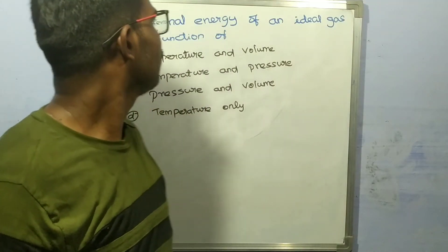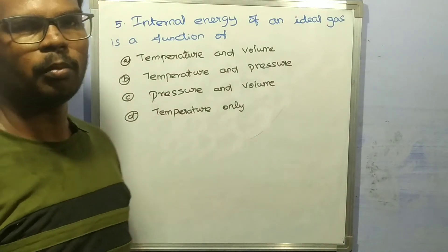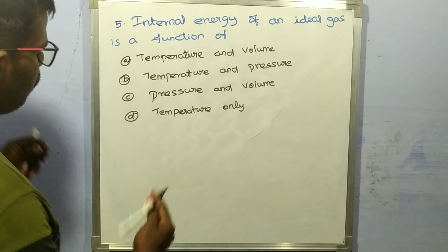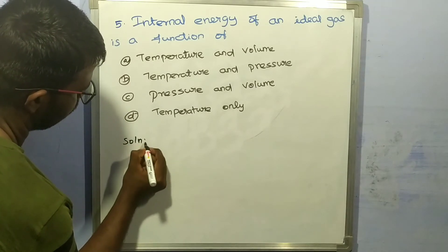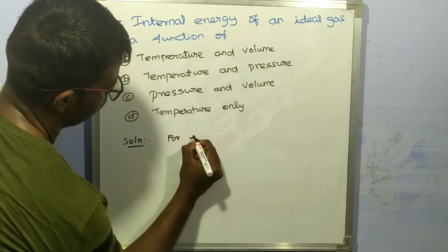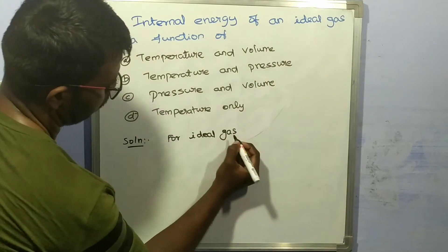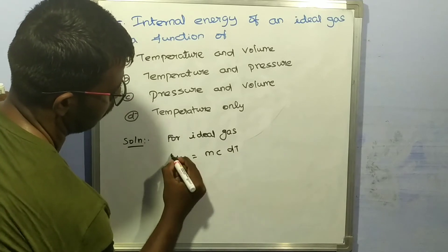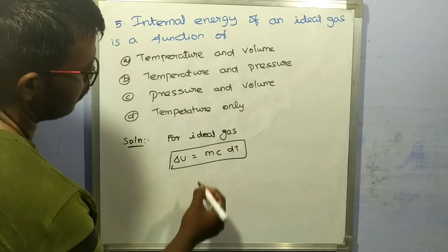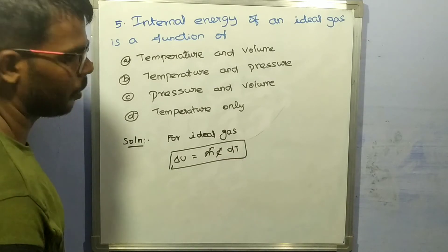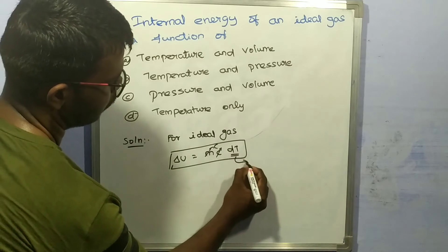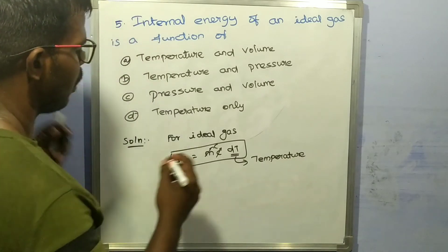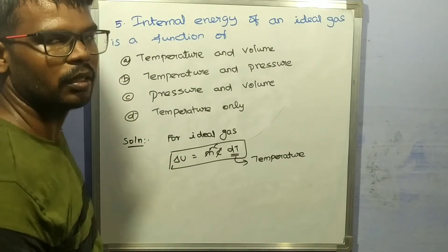Fifth question: the internal energy of an ideal gas is a function of — options are: A) temperature and volume, B) temperature and pressure, C) pressure and volume, D) temperature only. For an ideal gas, internal energy = mCvdT. Since mass and specific heat are constant, internal energy is a function of temperature only. Option D is correct.